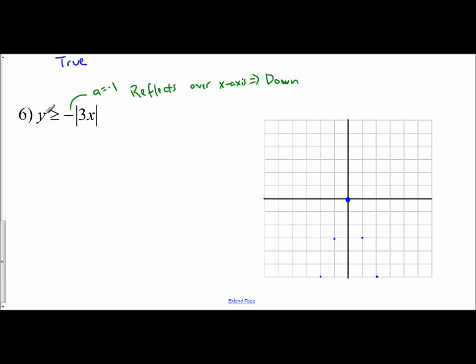And then we ask ourselves the same question. What type of line do we use? And so for this one, I'm going to use a solid line, because it is or equal to. So let me grab my solid line. Start at the vertex. It's opening down.